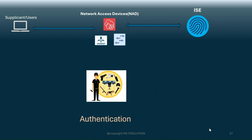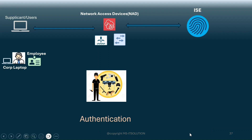Let me explain these AAA services with a real-life analogy. For example, you are going to the office. At the main gate, a security guard asks for your identity — that is authentication, the first A. Similarly, when you connect your machine to a wireless or wired network, you have to provide your credentials to prove you are a legitimate user. The security guard may also scan your laptop to check whether it is personal or corporate-provided. This authentication is done by the network access device, just like the security guard.